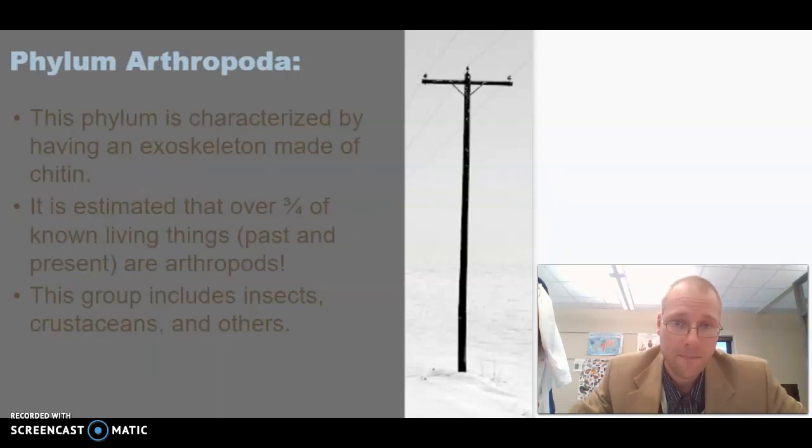The arthropods. The arthropods have an exoskeleton made of chitin. It's estimated that more than three-fourths of all known living things in the past and the present were arthropods. So guys, we're outnumbered. Arthropods have us outnumbered by a lot. This group includes insects, crustaceans like crabs and shrimp, and others like millipedes and centipedes. And arachnids.